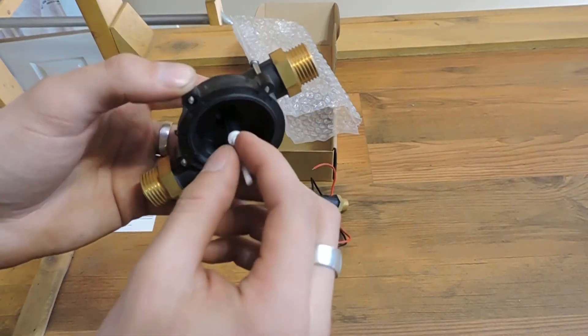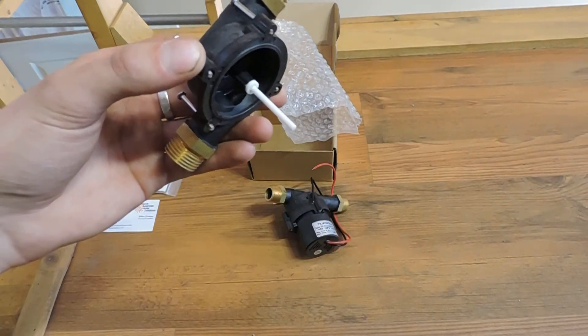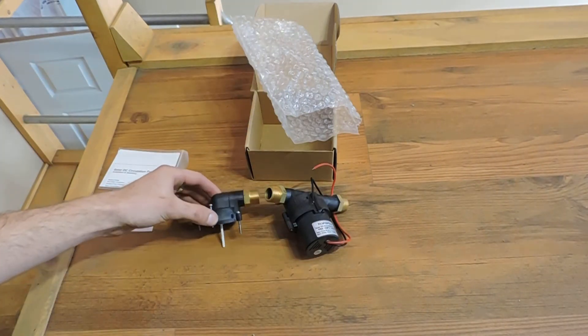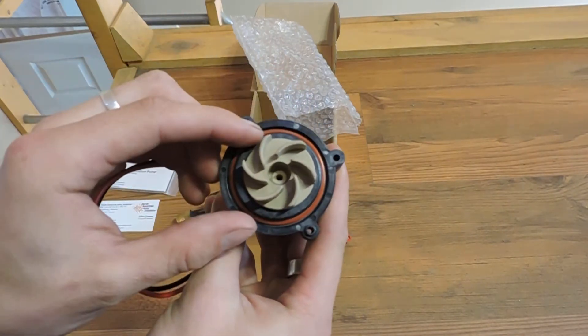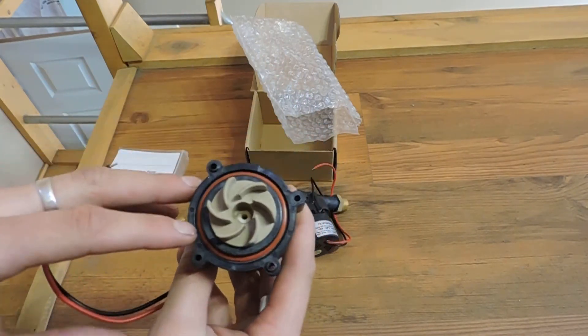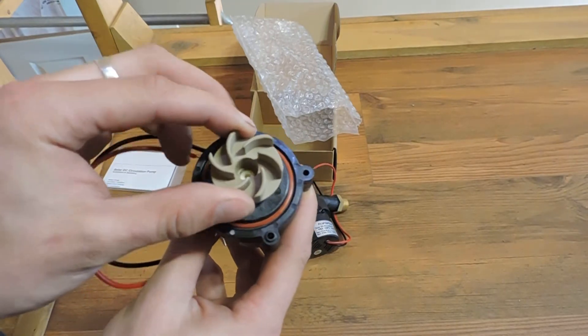On the inside you have a ceramic shaft. On the other side of the pump, you have your Viton o-ring. This one is especially made for glycol systems as glycol can eat away at standard seals.